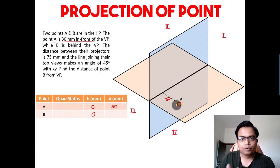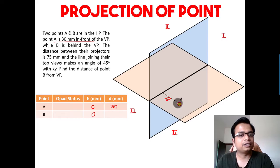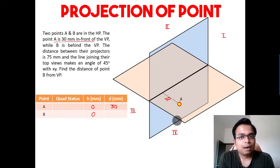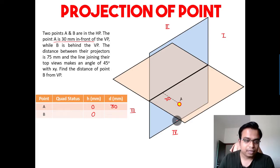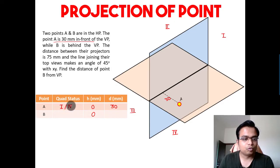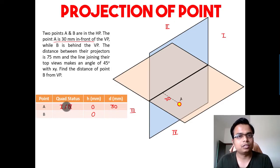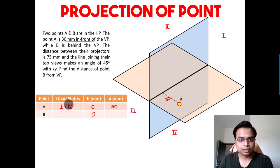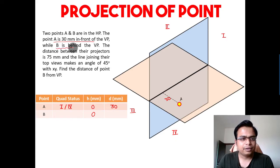Some of you may say that point A is situated in the first quadrant, and some may have the perspective that point A is lying in the fourth quadrant. Well, both options are absolutely correct. This point can be assumed to be in the first quadrant or in the fourth quadrant — it doesn't matter which HD principle you follow, you are going to end up making the same projection.